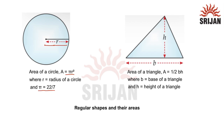For the area of a triangle, it is equal to half multiplied by base multiplied by height, where B stands for the base of the triangle and H is the height of the triangle. These are some regular shapes and their area formulas based on dimensions. I hope this topic is clear to you. Thank you.